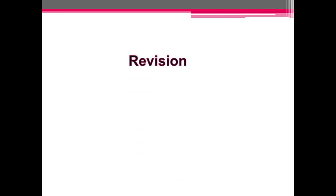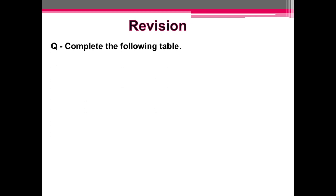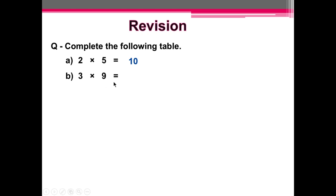Before starting the chapter, let's do a quick revision. First question: complete the following table. I know you all know tables — here there are a few easy questions. Let's do them. 2 multiplied by 5 is equal to? Yes, it's very easy — 10. Next one: 3 multiplied by 9 is equal to? 27. Next one: 4 multiplied by 8 is equal to? 32. Next one: 5 multiplied by 3 is equal to? 15.